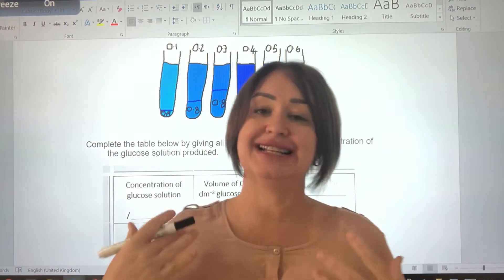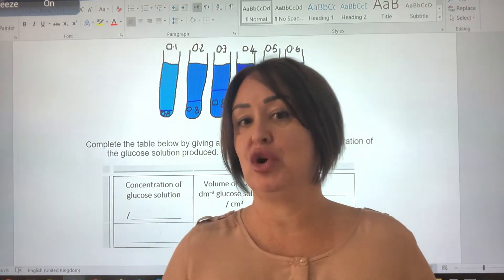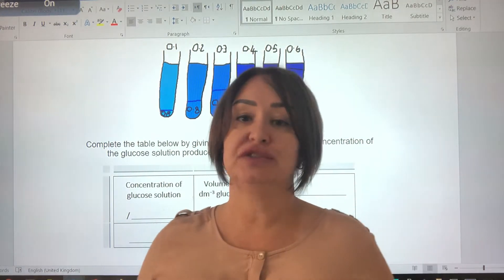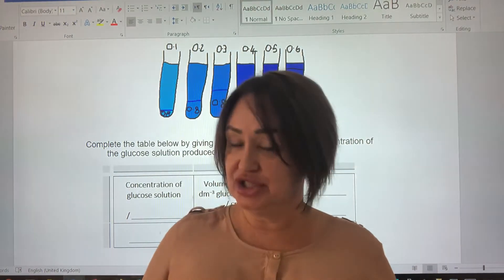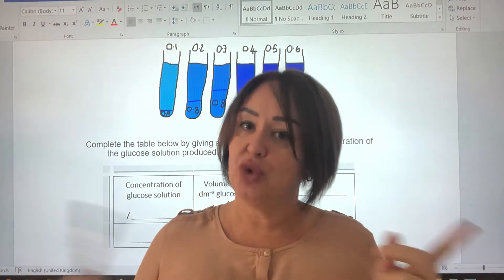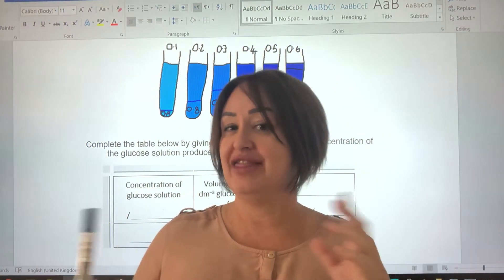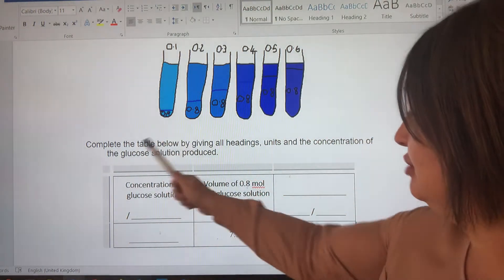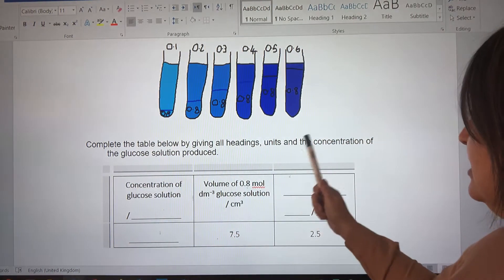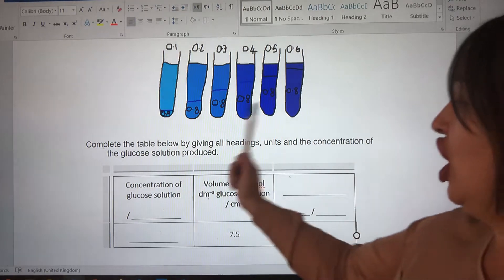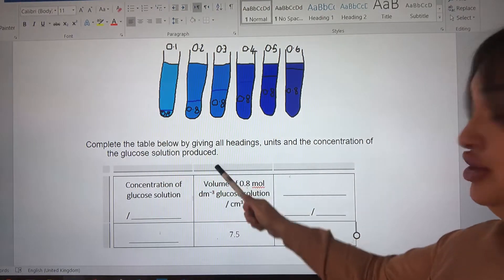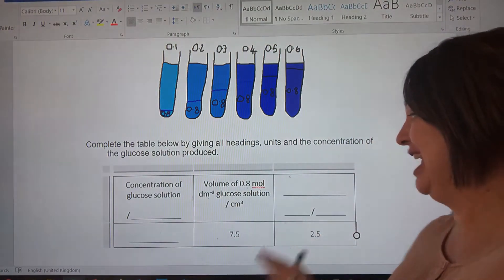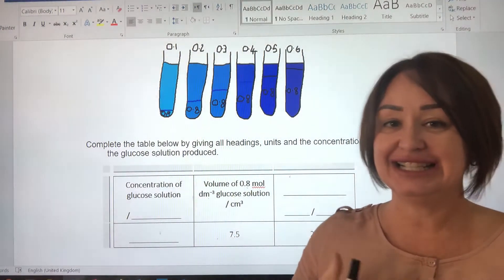This question is asking us in a slightly different format than we've used before. Remember, in the past we've used v1 times c1 equals v2 times c2 — if you're not up to speed with that, watch my other videos. However, this one has given us slightly different information to work with. It says complete the table below giving all headings, units, and the concentration of the glucose solution produced.